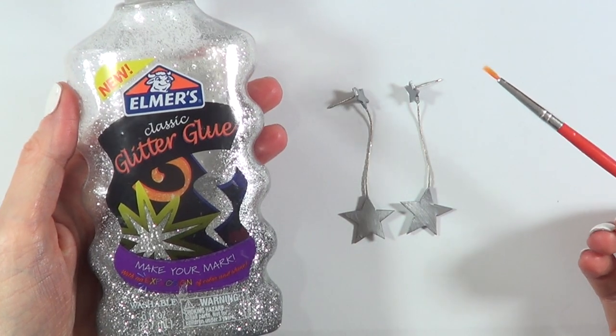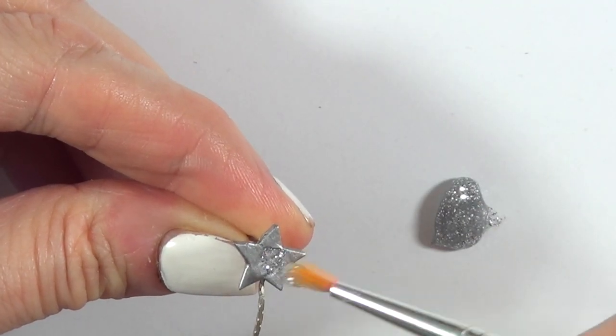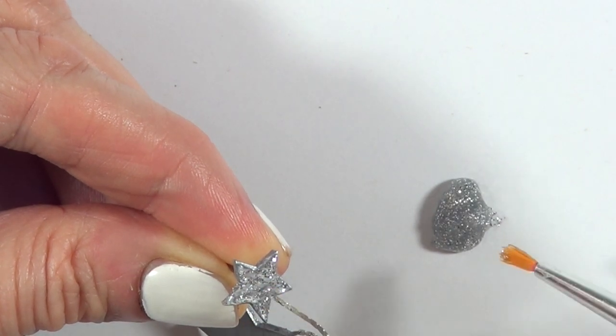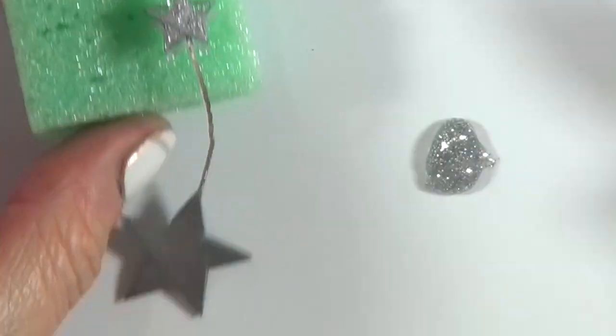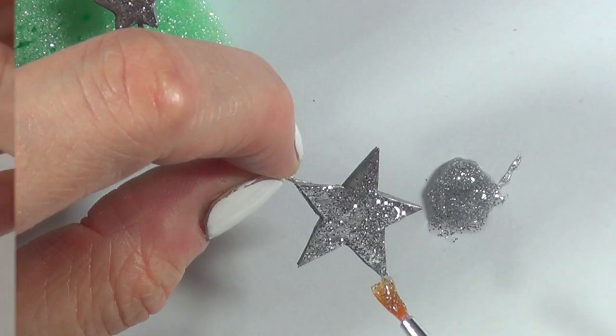I'm just going to be using this Elmer's classic glitter glue because I like how pigmented it is. I'm going to be using my brush and I'm going to pretty much cover the stars, giving them a couple of coats, letting them dry between coats until they look fun and sparkly and pigmented.